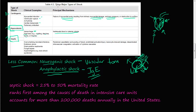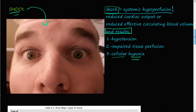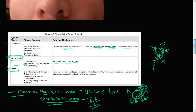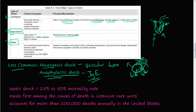In the last video, we talked about the three major types of shock: neurogenic shock and anaphylactic shock. Just to remind you, shock basically means systemic hyperperfusion, and the end result is hypotension, impaired tissue perfusion, and cellular hypoxia. In this video, we're going to talk about septic shock and what that means.